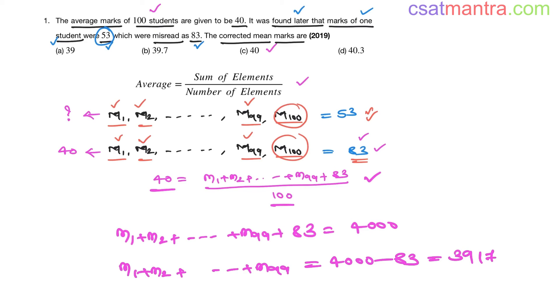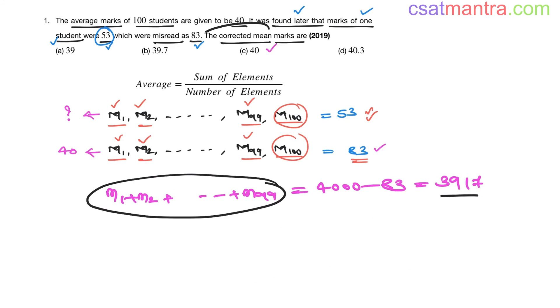So, the sum of the marks of 99 students is 3917. Now, the corrected mean, corrected average—we have to take these marks.